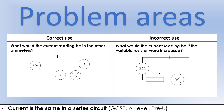Let's start with the idea that current is the same in a series circuit - where it's correct to use it and where people use it and get into trouble. On the left, a correct use: we've got a series circuit with no junctions splitting off into a parallel loop. The ammeter on the left reads 2 amps, so all the other ammeters should also read 2 amps - the same number of charges per second passing through every point in that circuit.